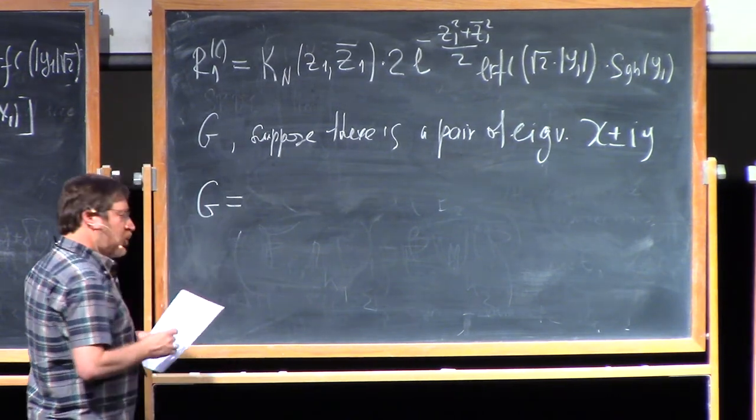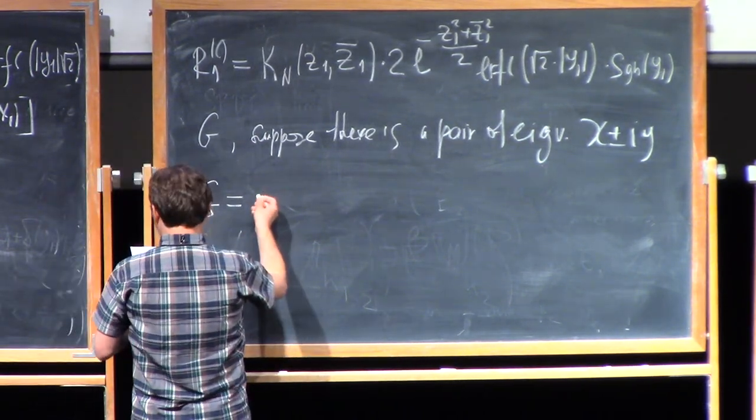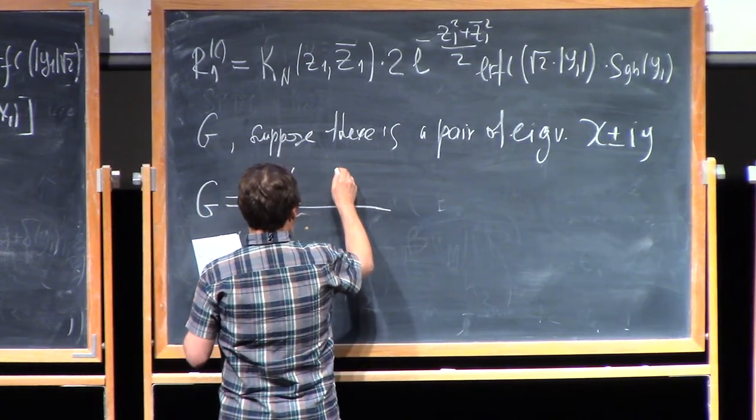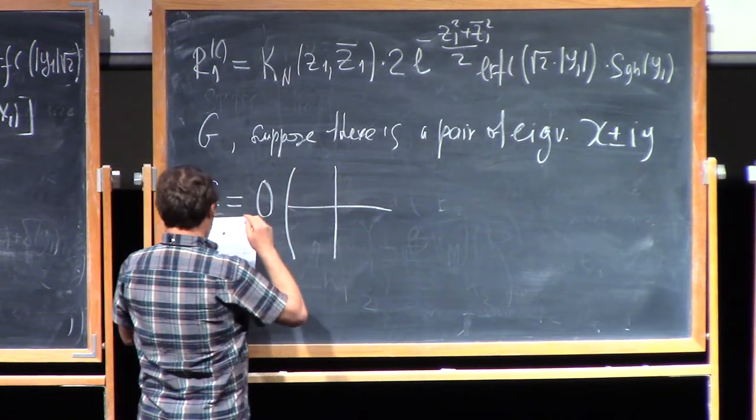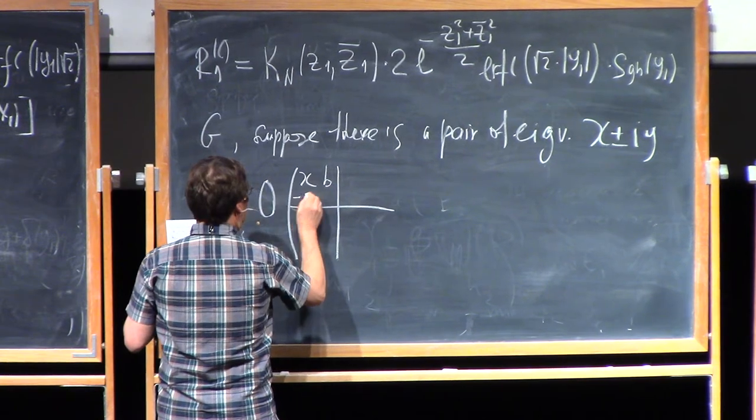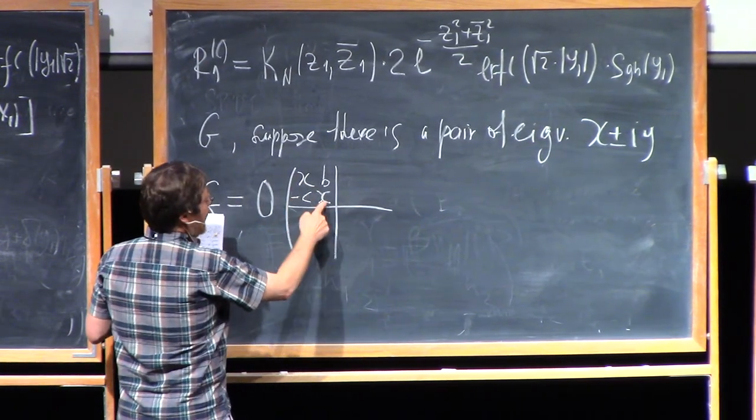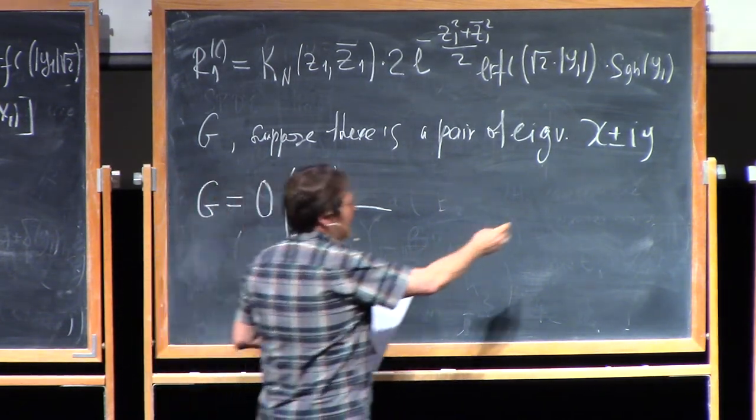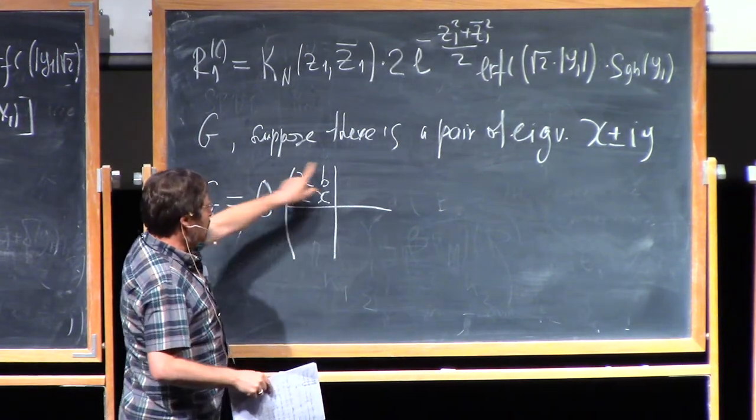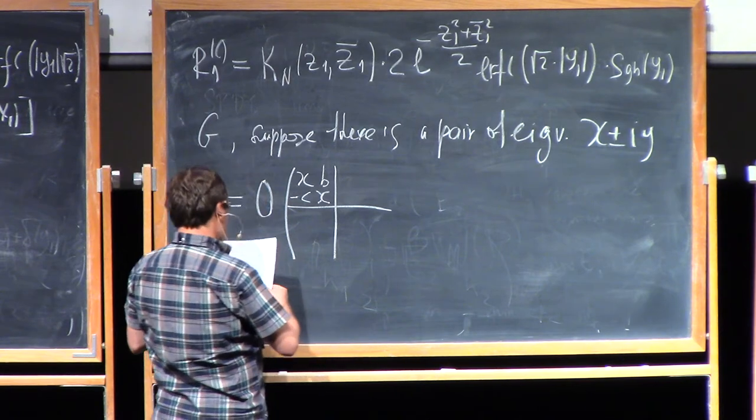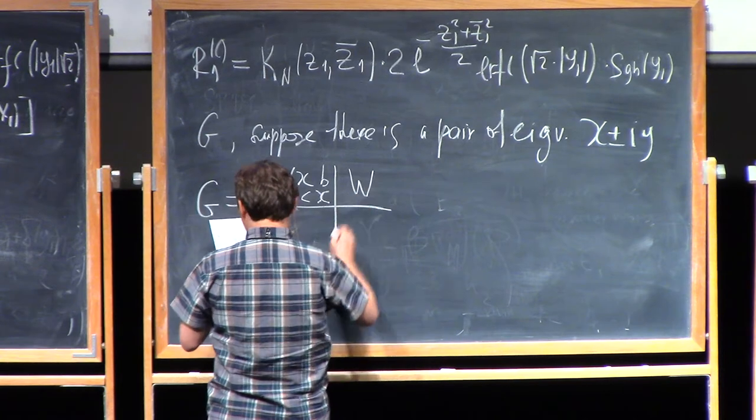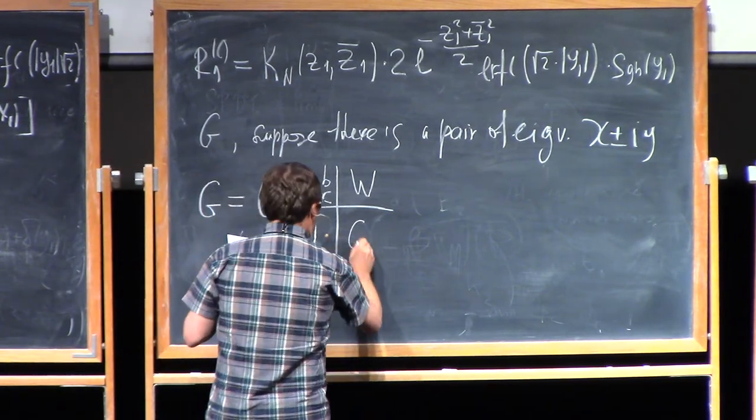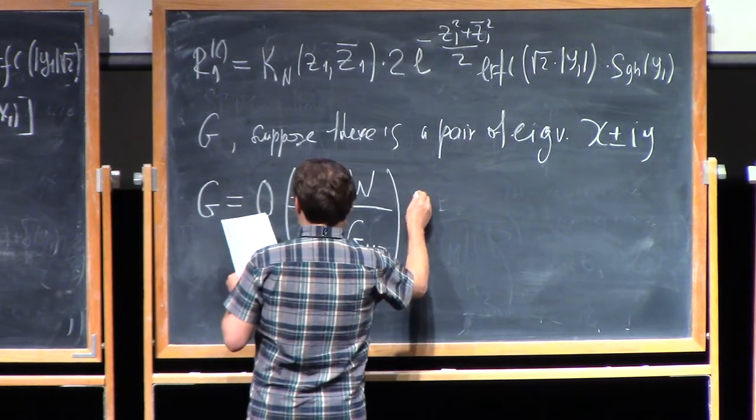So the trick that Sommers suggested basically is that one can provide relatively independent method of evaluating explicitly this function R1, and then comparing with this expression, recover the kernel. So let us come back to our Ginibre matrix G, is a matrix of real entries, n by n. Suppose that we know that it has a particular eigenvalue, a pair of complex conjugate eigenvalues x plus and minus iy.